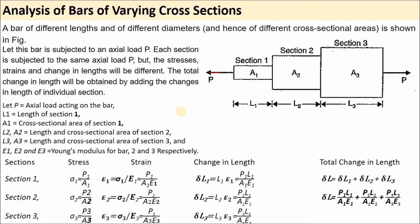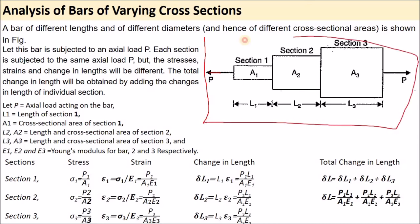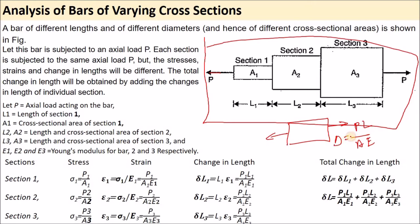Let's come to the theory of analysis of a bar of varying cross-section. This is a structure of a bar with varying cross-section. The total section has three parts — one, two, three — and all cross-section areas are changing. In this type of problem we solve differently compared to a simple bar with the same cross-section area, where we simply use δL = PL/AE.